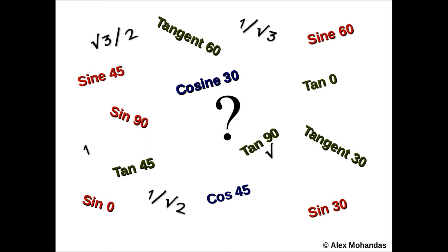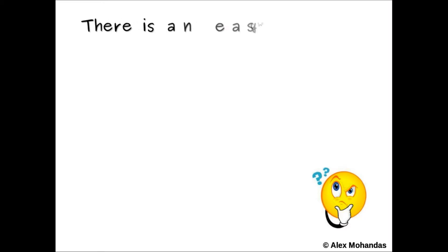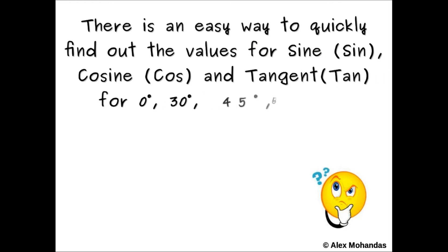There is an easy way to quickly find out the values for sine, cosine, and tangent for 0 degree, 30 degree, 45 degree, 60 degree, and 90 degree. In this video, we will see how to do it.